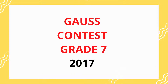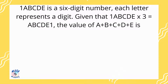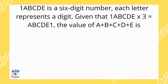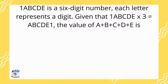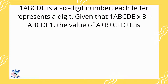In today's video, we will look into one of the questions asked in the Gauss contest for grade 7 in the year 2017. Let me read the question. 1abcde is a six-digit number. Each letter represents a digit. Given that 1abcde times 3 is equal to abcde1, the value of a plus b plus c plus d plus e is what?